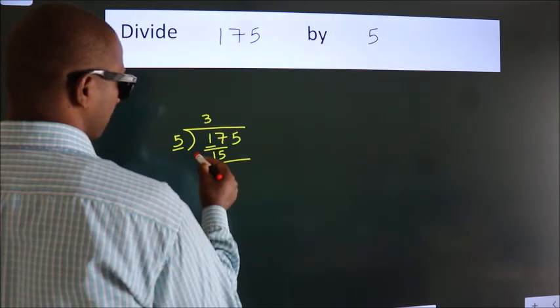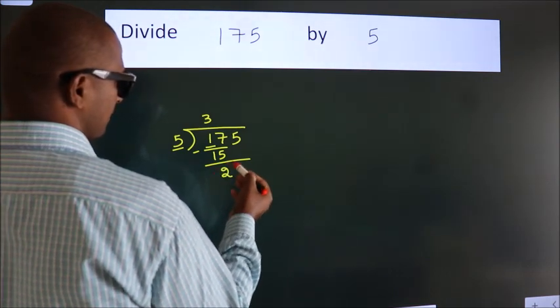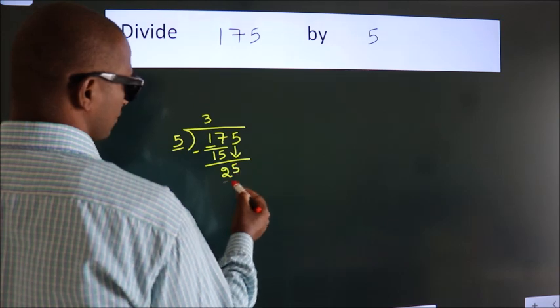Now we should subtract. We get 2. After this, bring down the beside number, so 5 down. So 25.